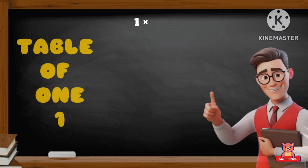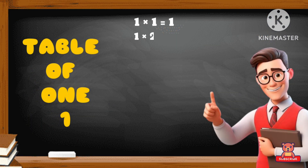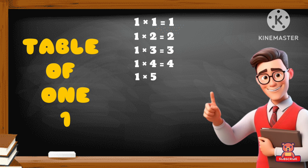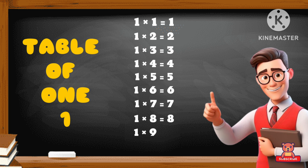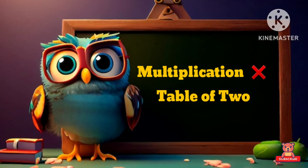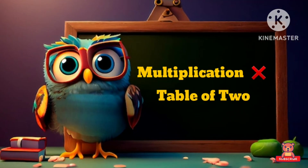One six's a six, one seven's a seven, one eight's a eight, one nine's a nine, one ten's a ten. Move to next — multiplication table of two.